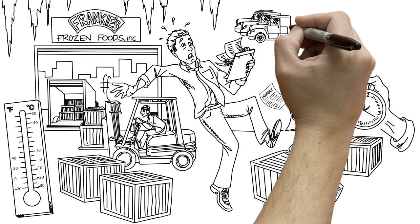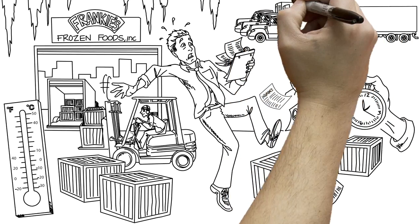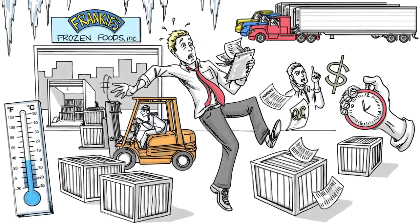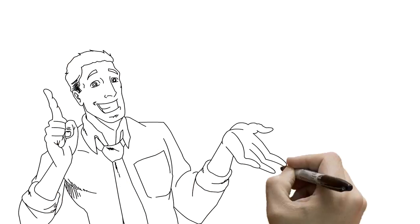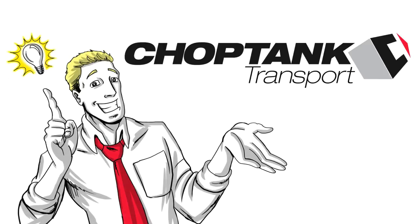The list is never ending and running around trying to juggle everything is exhausting, especially when he has dozens of shipments to arrange in a single day. Which is exactly why Sam decided to use Chop Tank Transport.